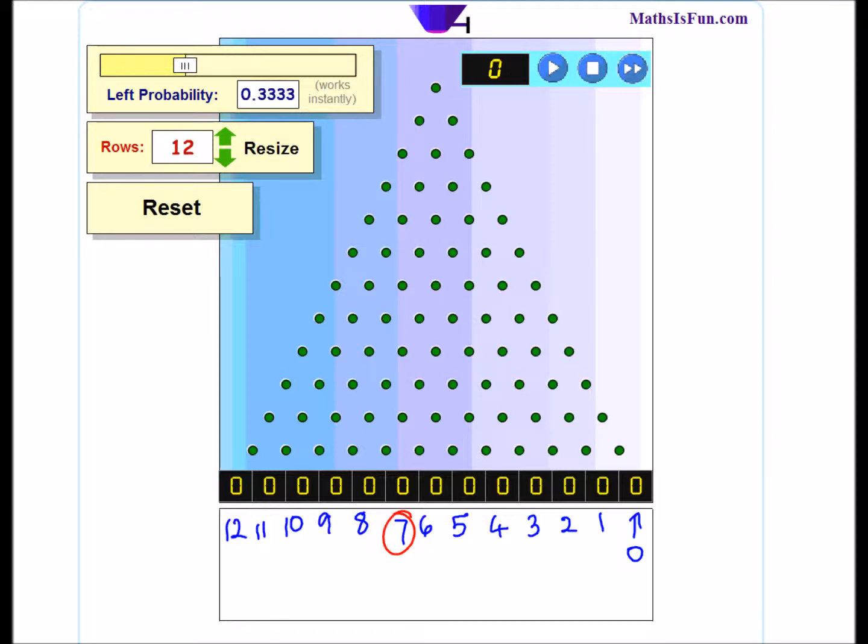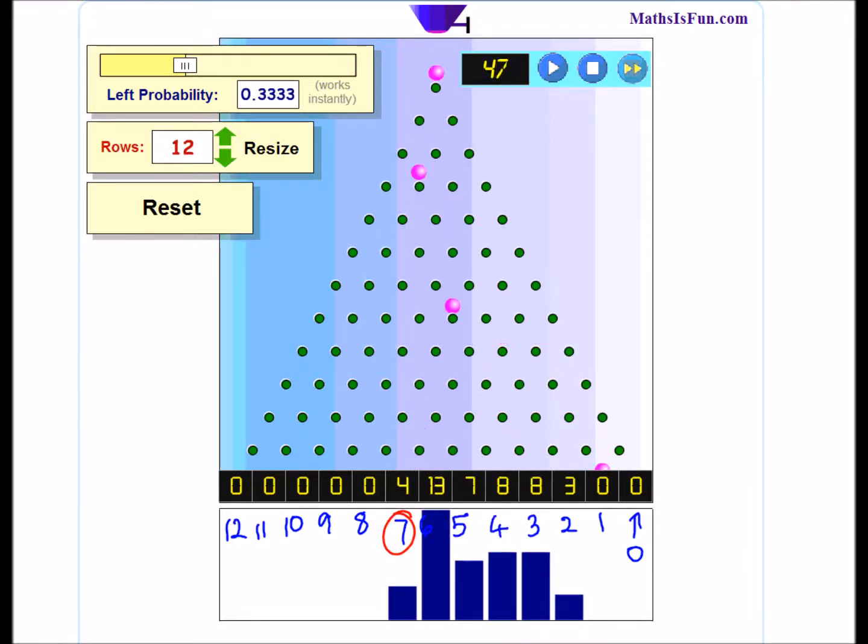And the question is, well that's more than I'd expect, but how likely is it? So I'm going to run the machine and we can see what the machine says. I'm going to speed this up a little bit. You can see that we don't have very many coming into this seventh column, but we do have some coming into it.